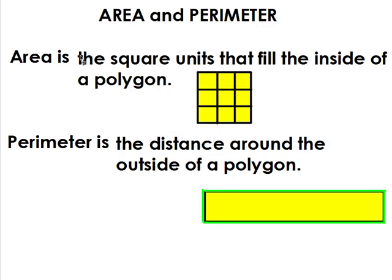First of all, we need to remember that area is the square units that fill the inside of a polygon. Area always talks about the inside, and perimeter is the distance around the outside of the polygon. So perimeter is the outside, area is the inside — area always measured in square units, perimeter in just regular units.